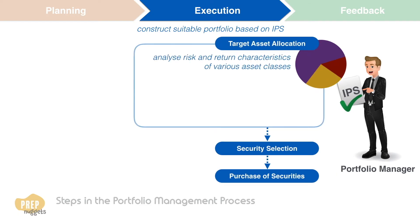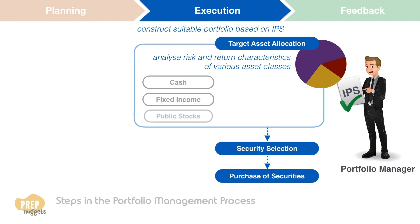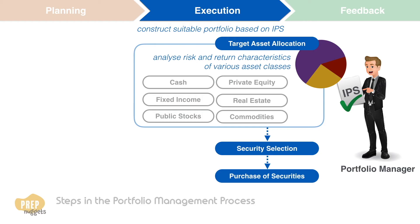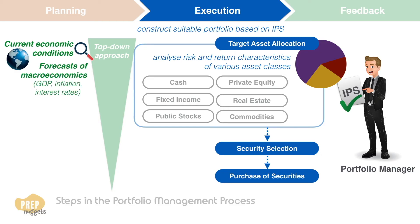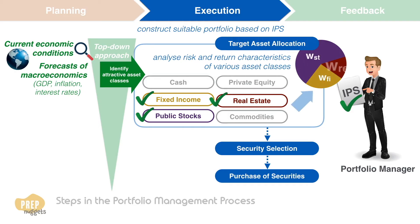The process of determining the target asset allocation starts with an analysis of the risk and return characteristics of various asset classes. Common asset classes include cash, fixed income securities, publicly traded stocks, private equity, real estate, and commodities. You can take the top-down analysis approach, examining current economic conditions and forecasts of macroeconomic variables such as GDP growth, inflation, and interest rates, to identify the most attractive asset classes based on risk and return expectations.